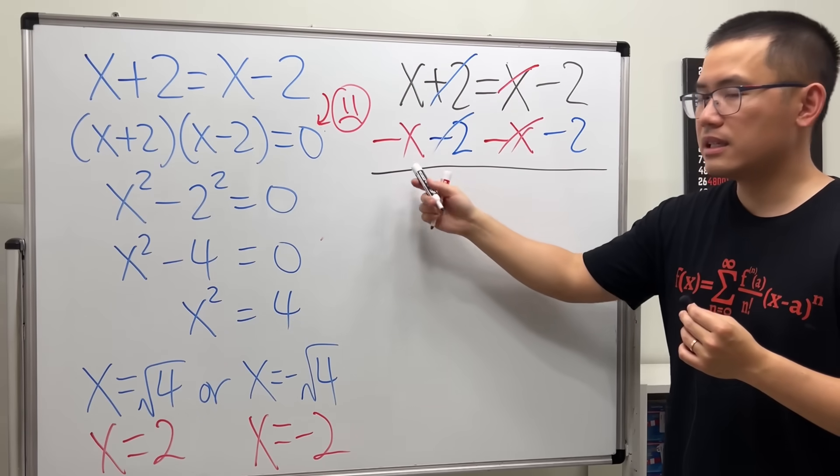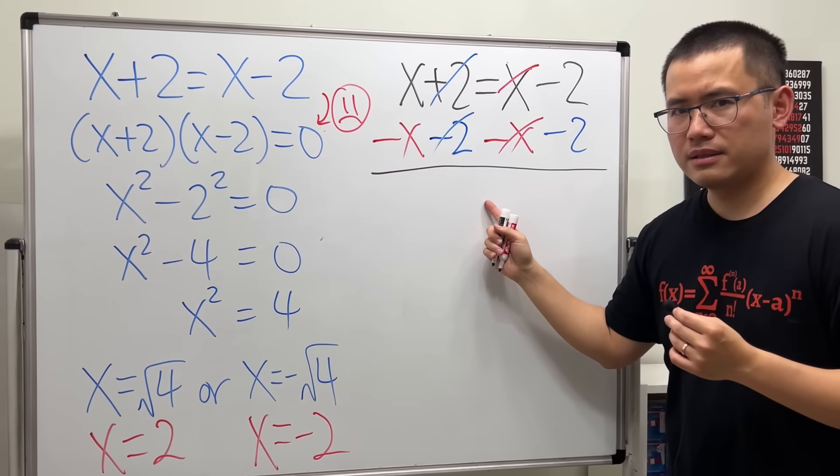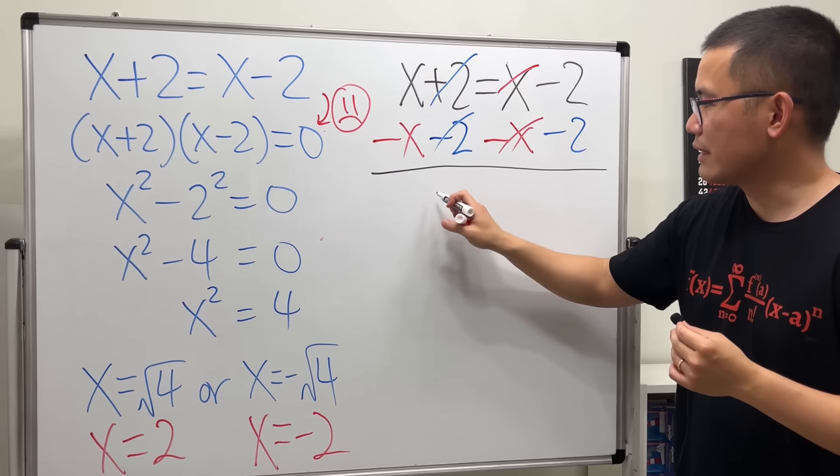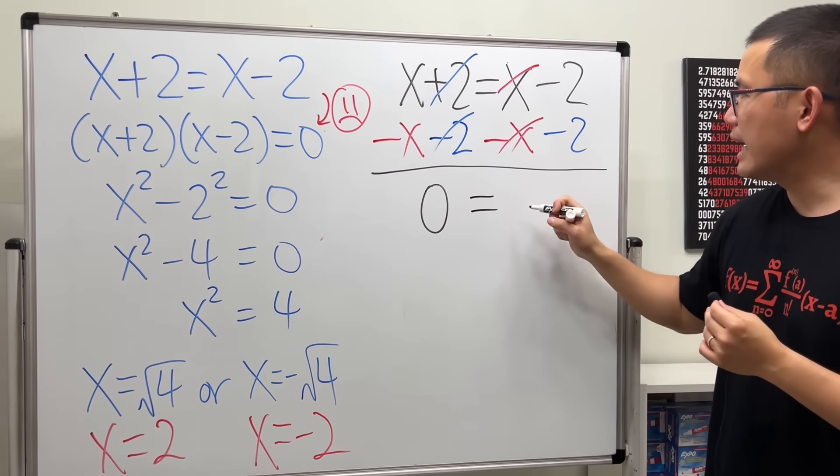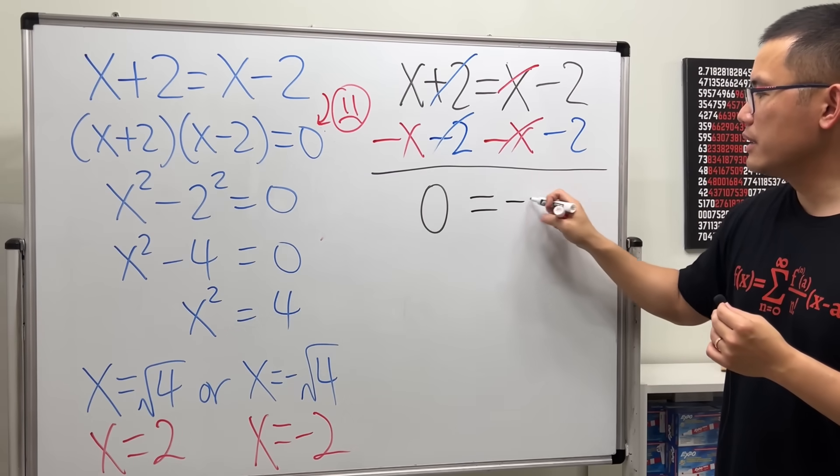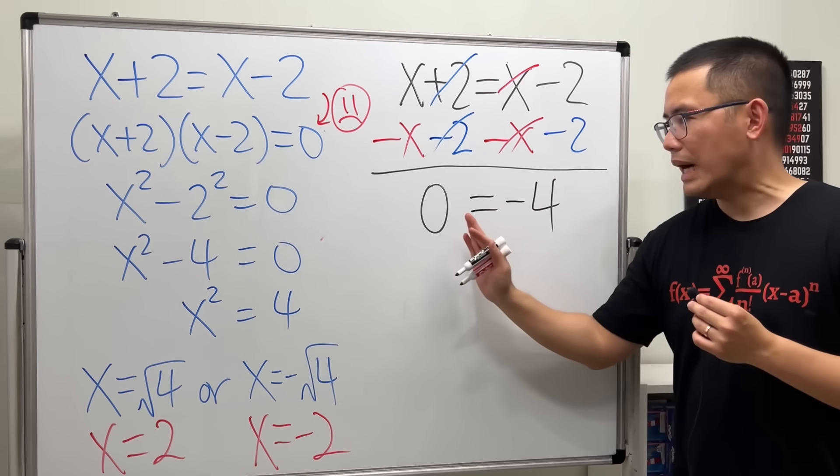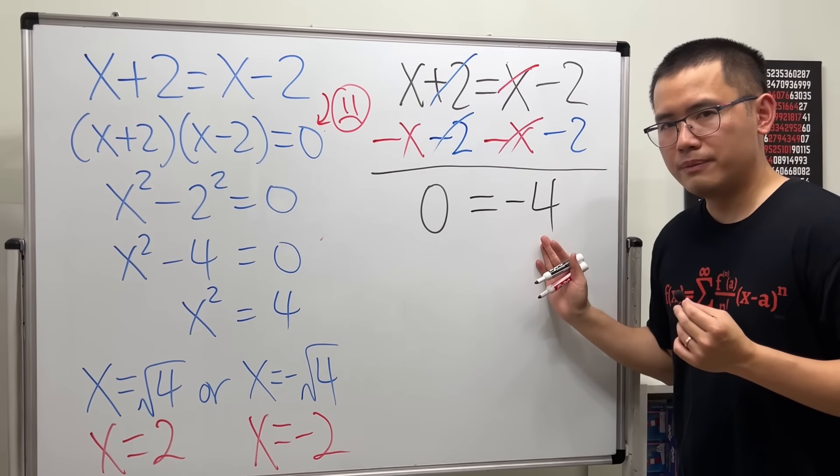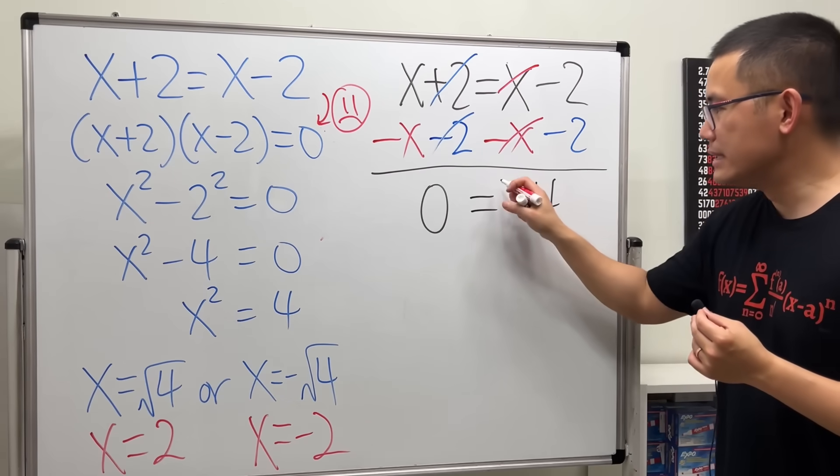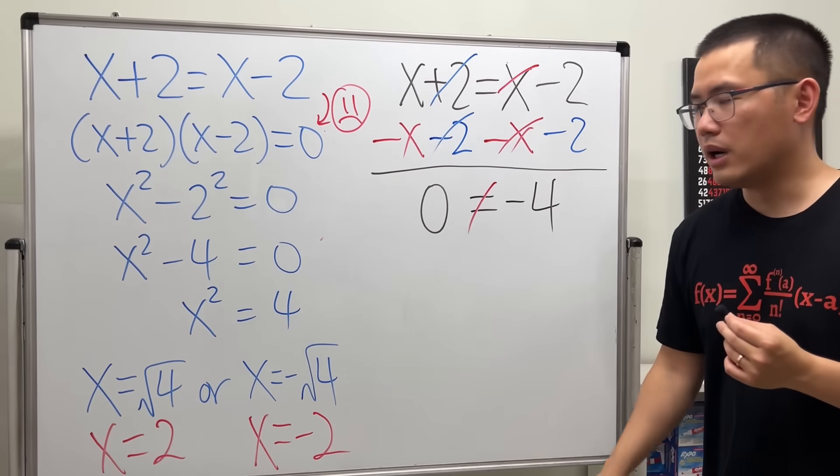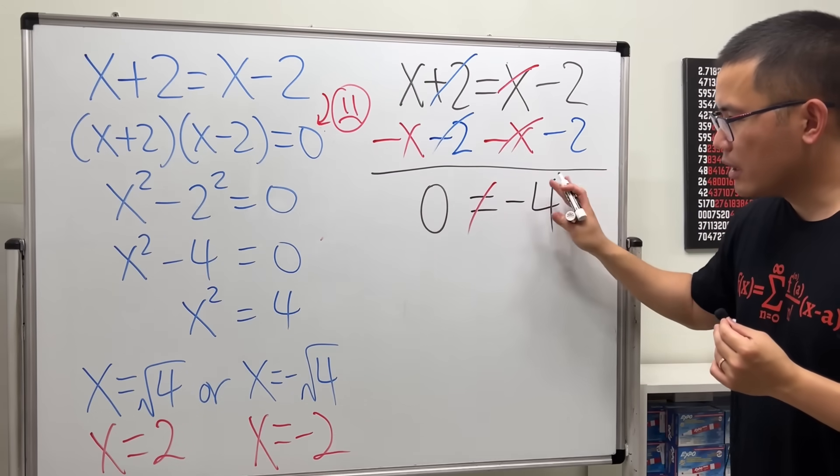Then, to continue, x minus x is 0x. It's just 0. So, we just have 0. And on the right-hand side, negative 2 minus 2 is negative 4. So, now as you can see, we have 0 is equal to negative 4. 0, of course, it's not equal to negative 4. So, this statement here is false.